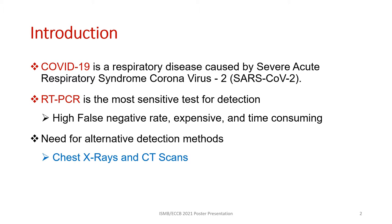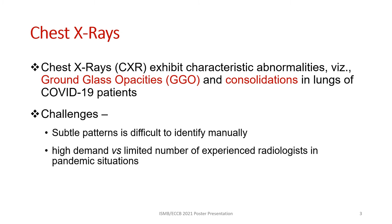Detecting the disease from radiographs and radiology images is perhaps one of the fastest ways to diagnose patients. Some early studies showed specific abnormalities in the chest radiograms of patients infected with COVID-19, such as ground glass opacities and consolidations. While radiography can be quickly performed, the interpretation of images by radiologists is challenging due to limitations in human capacity for detecting subtle visual features and lack of sufficient human resources.